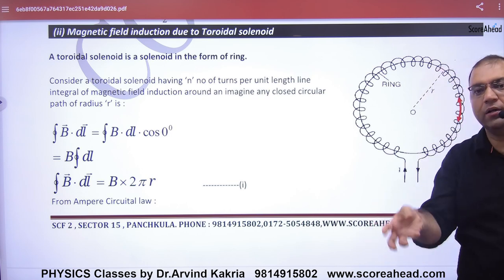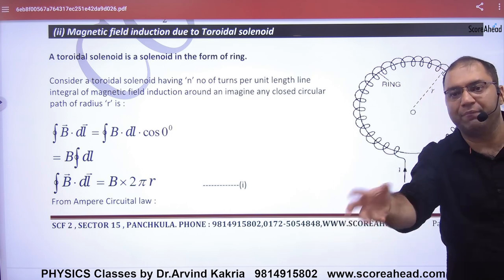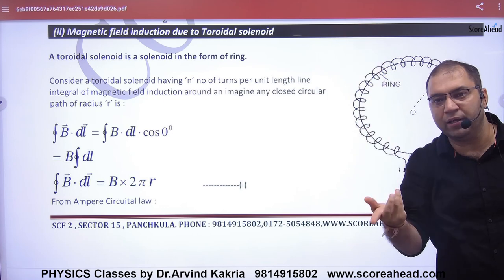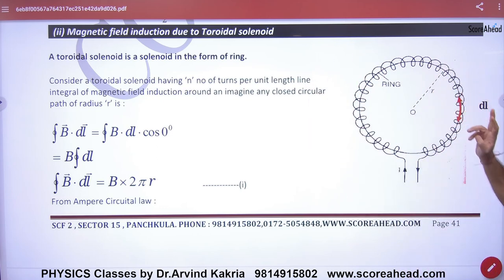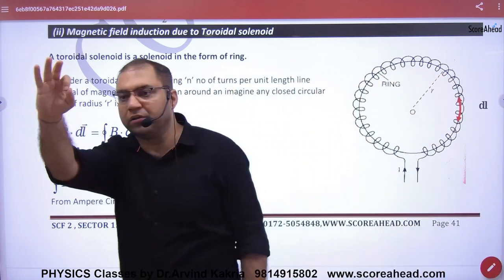Where do you take the closed path? Do you take it outside or inside? Inside it has a closed path. So in B dot DL, what will B dot DL be? Zero if outside.